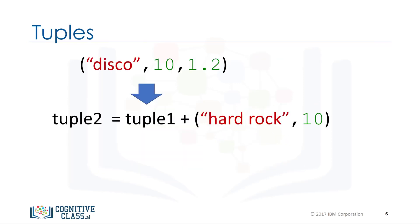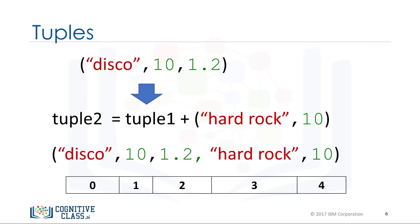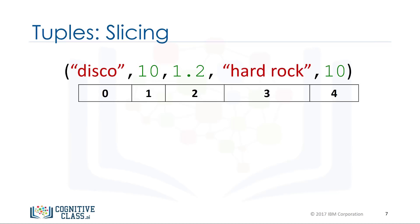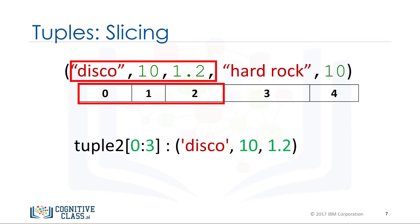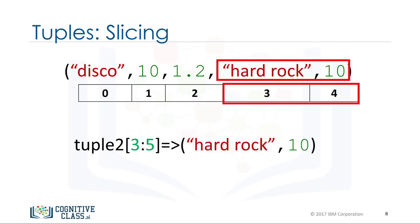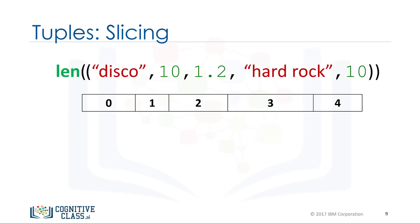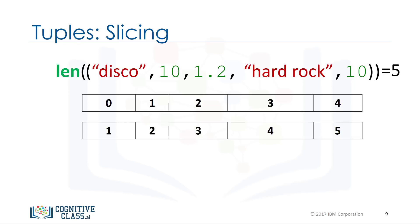We can concatenate or combine tuples by adding them. If we would like multiple elements from a tuple, we can also slice tuples. For example, if we want the first three elements, we use the following command — the last index is one larger than the index you want. Similarly, if we want the last two elements, we use the following command. We can use the len command to obtain the length of the tuple; as there are five elements, the result is five.